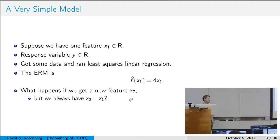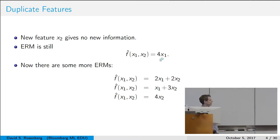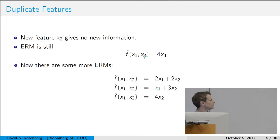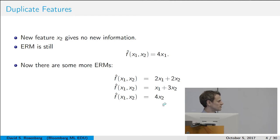So what happens if we get a new feature x2, but x2 is exactly equal to x1? We can fit our model and minimize our empirical risk, constrained or not. x2 gives no new information, and ERM is still 4x1 because it can just ignore x2. But there are also new empirical risk minimizers — you could split the weight between x1 and x2 arbitrarily: put 2 on x1 and 2 on x2, or 1 and 3, or put it all on x2. So there's an infinitely many ways to divide the weight, and they're all equivalent in terms of the prediction function.